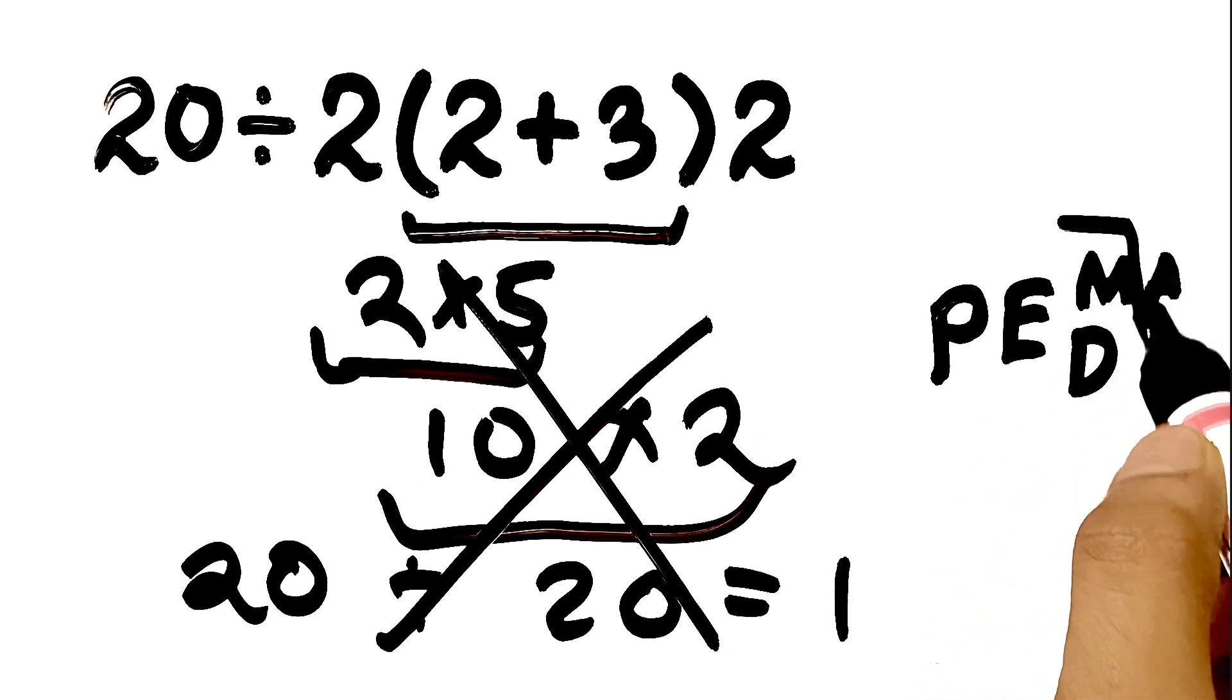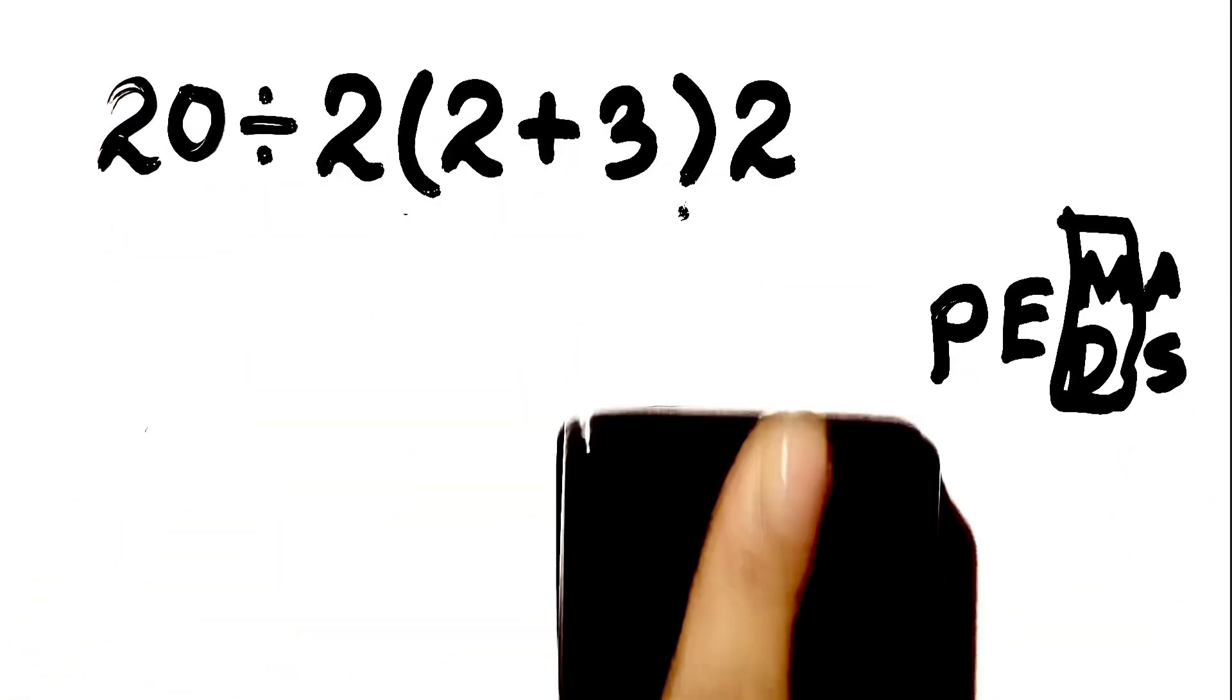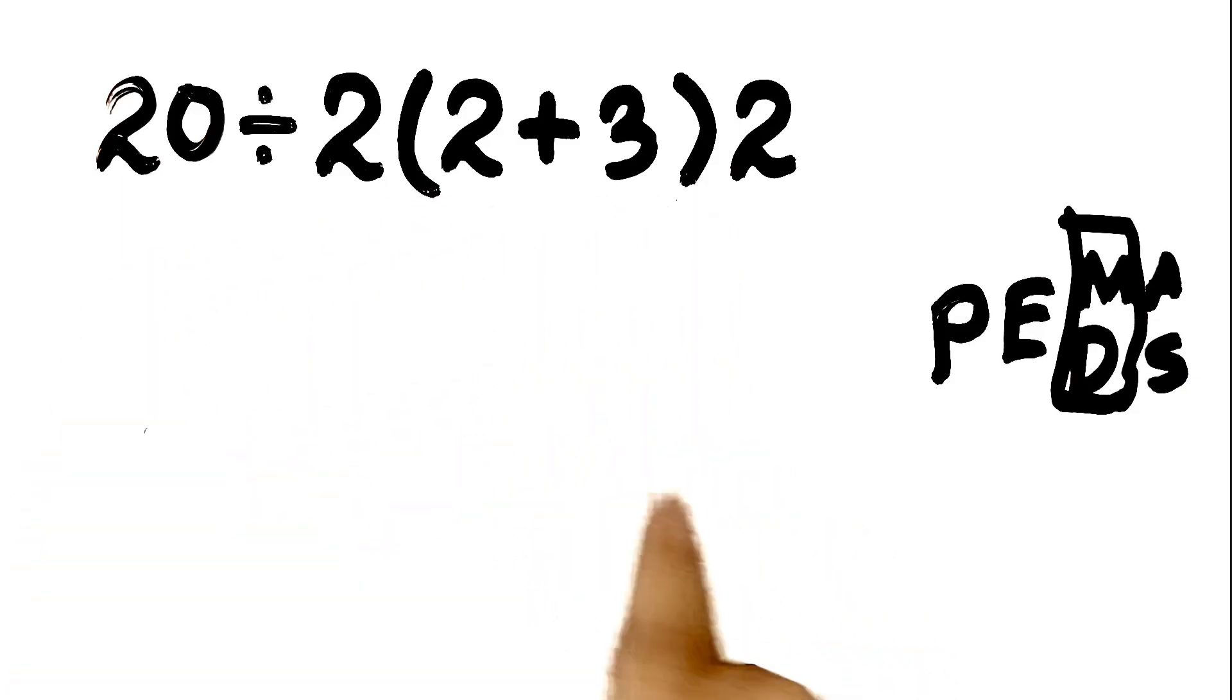Remember that multiplication and division have equal priority, and we have to work from left to right. And the same applies to addition and subtraction.